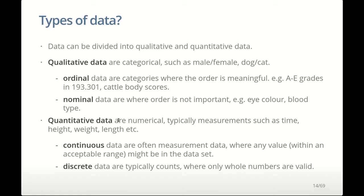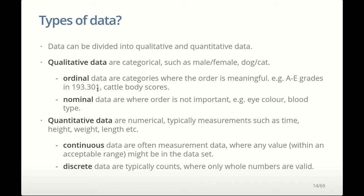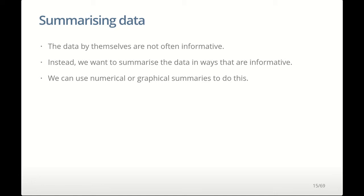Quantitative or numeric data can be either continuous, where you can get decimal places or fractions, or discrete, where you typically only get whole numbers such as when you're counting things. Typically there's not really any difference in how you deal with these two types in this course. If your counts are large, you can treat them as if they're continuous. The difference between ordinal and nominal is really just about how you present the data — if there's an order that's important, display it in a way that keeps that order.